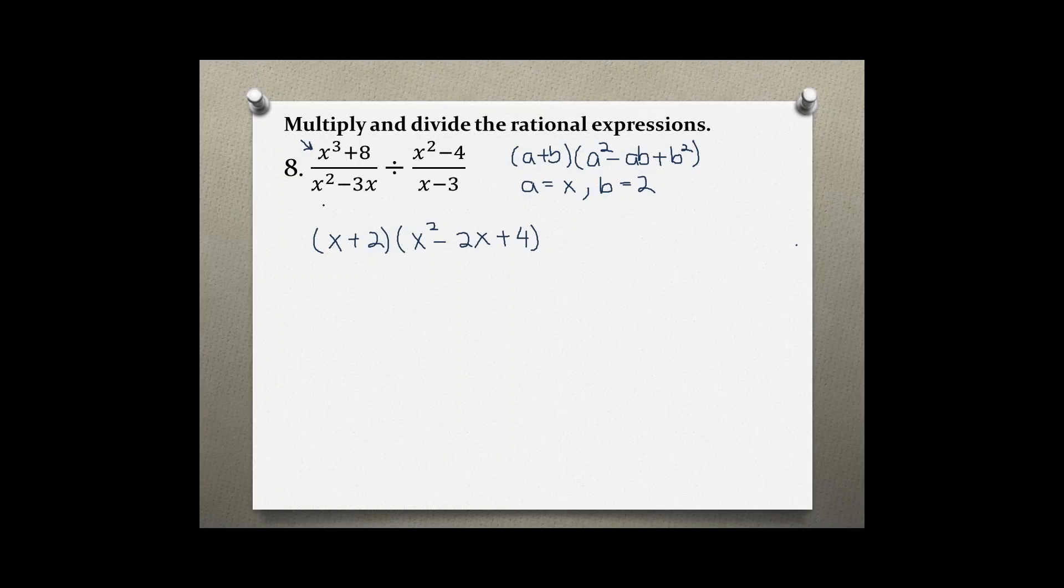Done factoring this first part, now moving on to the bottom, x squared minus 3x. In this case, both of them have a common factor, a greatest common factor of x. Pulling out an x, we are left with x minus 3. Now, on the right side, this is the difference of two perfect squares, and we can write our empty sets of parentheses, square root the first term, so x and x, and square root the second term, which is 2, 2, and then we need a plus and a minus.